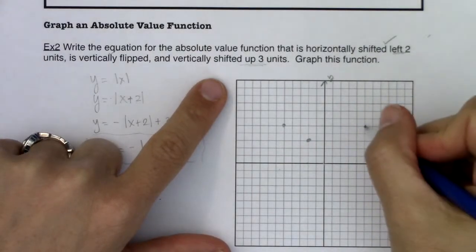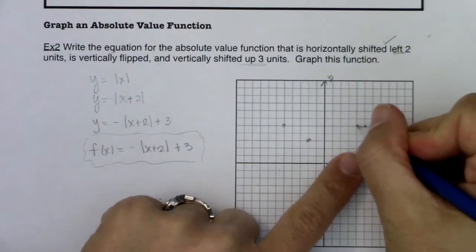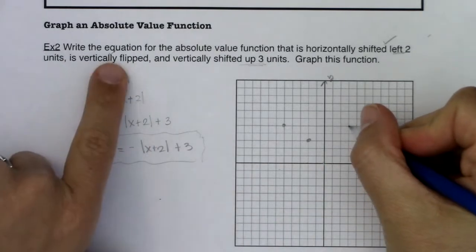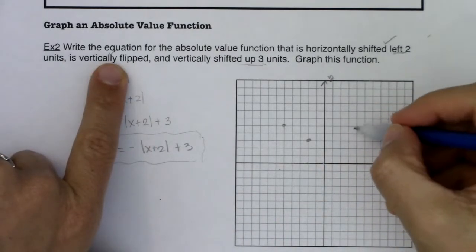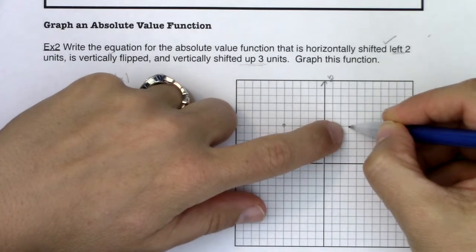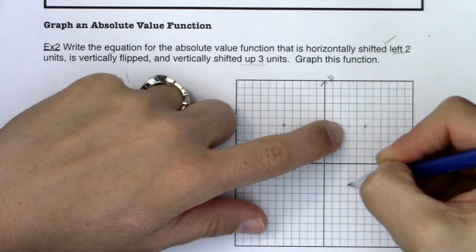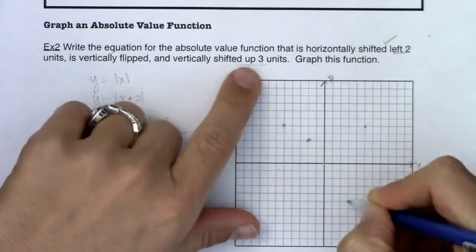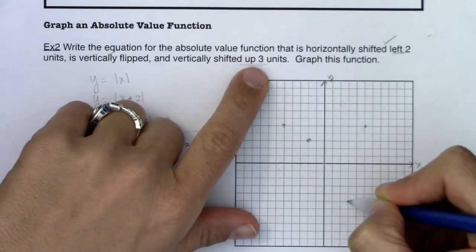All right, let's try this one. First of all, I need to shift left two. So one, two. I need to vertically flip. Well, if I vertically flip, if my pencil is at negative 3, 5, it's now going to be at negative 3, negative 5.